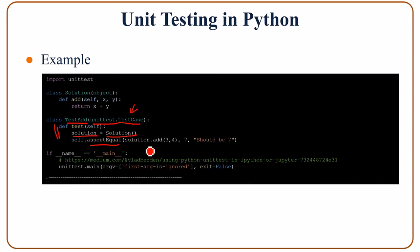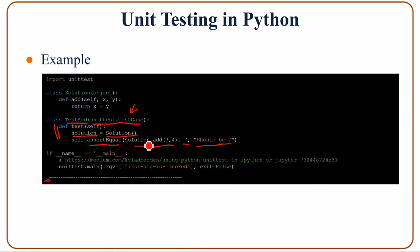The assertEqual method checks if the result of adding 3 and 4 is equal to 7. If it is not equal to 7, we would see the error message 'should be seven.' If the test runs through, the result shows just a dot — one dot indicating that the single test ran through. We may have multiple tests, and multiple tests would give multiple dots. Otherwise, if something is wrong, the result returns false.